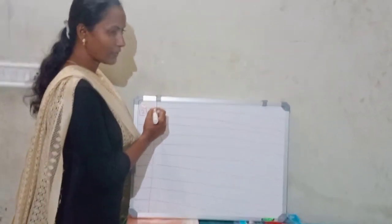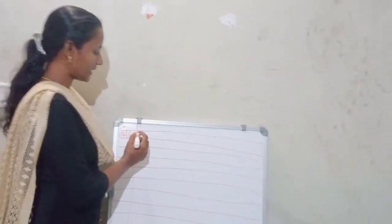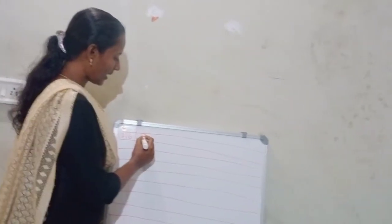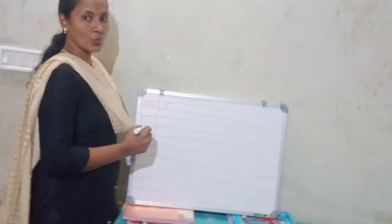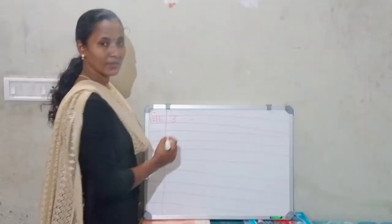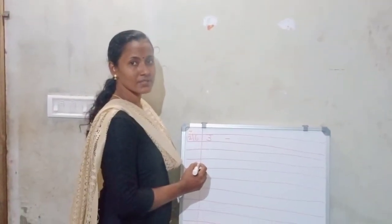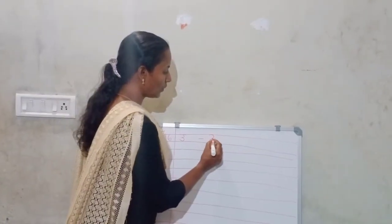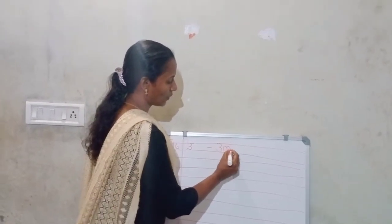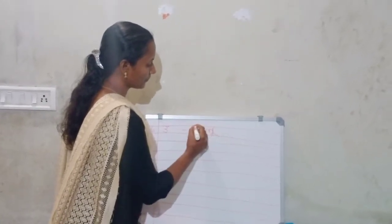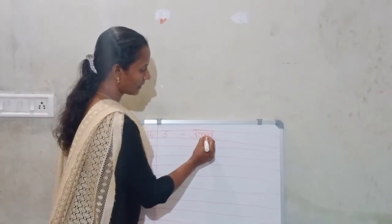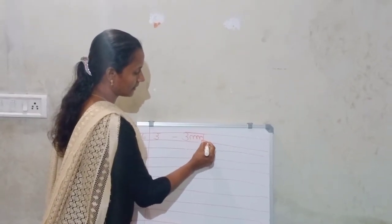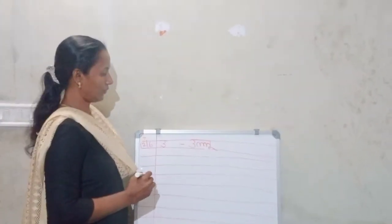Shall we start? Okay, fine. So first of all, ee — after ee, which letter comes next in Swaraksha? Uu. What have you written? Uu. Uu se — which word comes? Ullu. Very good. Ullu. How do you write Ullu? Uu, then half of la, then pullu. Okay. Ullu. Very good. Now leave one line, then write Uu.